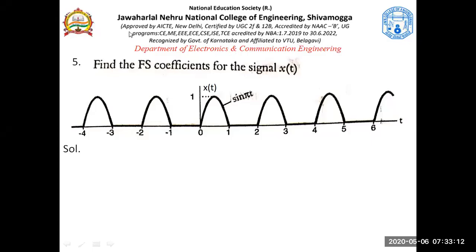Let's see the next problem in which we're finding out the Fourier series coefficients X(K). Compared to previous problems where X(T) used to be given in terms of an equation, now the same X(T) is given in terms of a waveform. The waveform is sine(πT), and this is a time domain signal. Since Fourier series are applicable to continuous time periodic signals, this has to be a periodic signal.